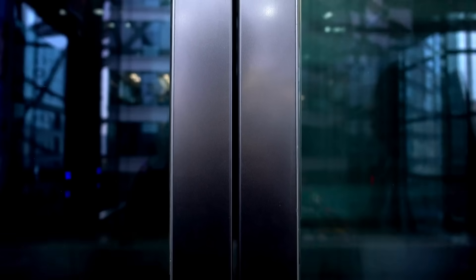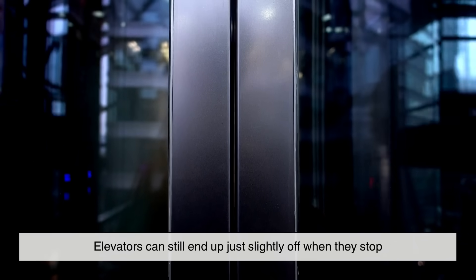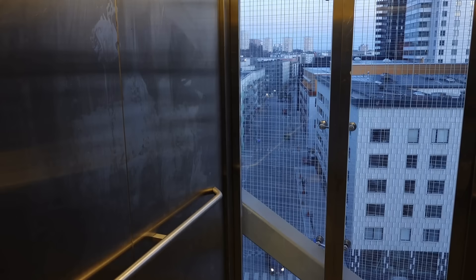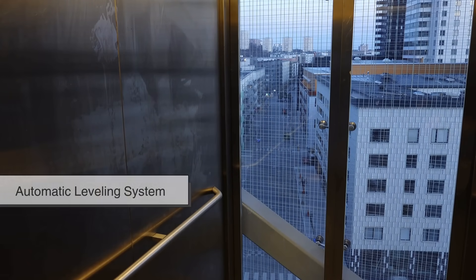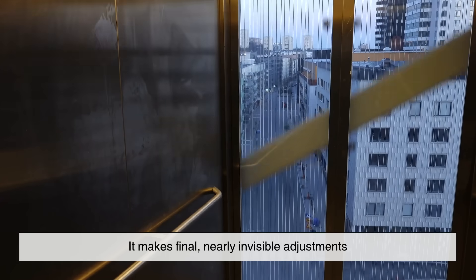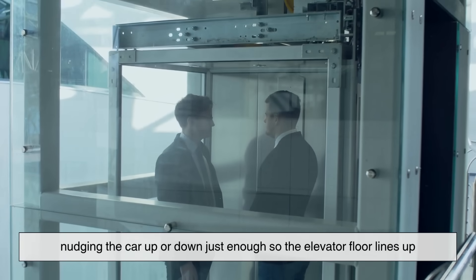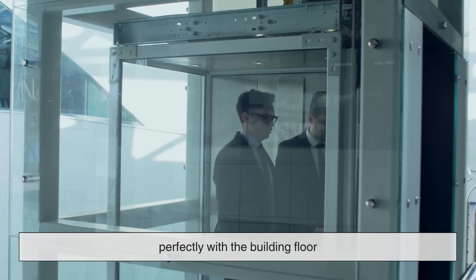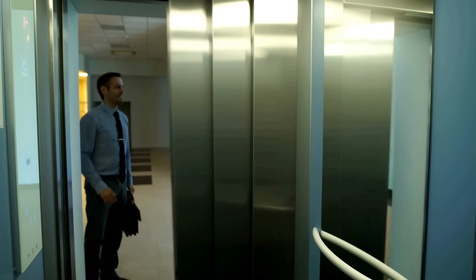Even with all this tech, elevators can still end up just slightly off when they stop, maybe a bit too high or too low. That's where the automatic leveling system kicks in. It makes final, nearly invisible adjustments, nudging the car up or down just enough so the elevator floor lines up perfectly with the building floor, keeping passengers safe and the trip smooth.